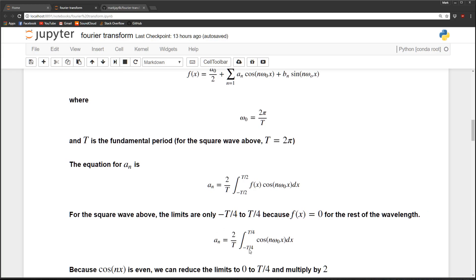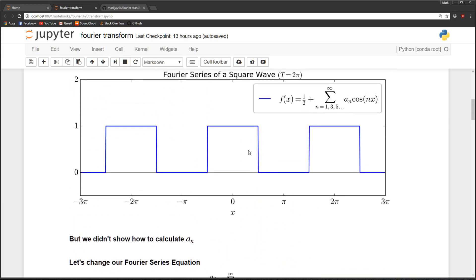So our integral becomes something a lot more simple. It's this right here. So we've shortened the limits of integration and we've replaced f of x with one. And one more simplification we can do is because cosine is an even function, what that means is it's symmetric about x equals zero. So since it's symmetric, the integral on the negative side is the same as the integral on the positive side.